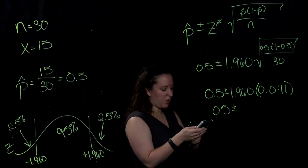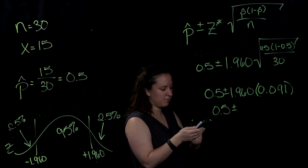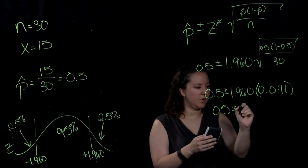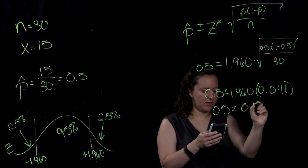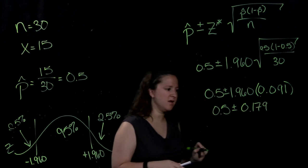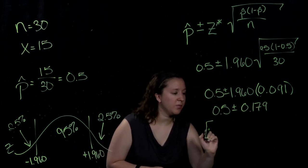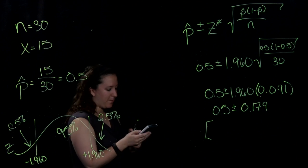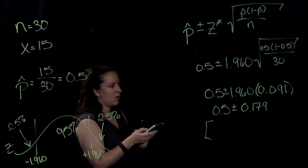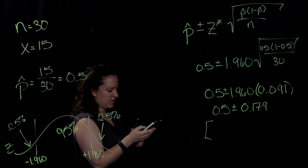You multiply that value by 1.960. You get 0.179. So our lower bound is 0.5 minus 0.179,